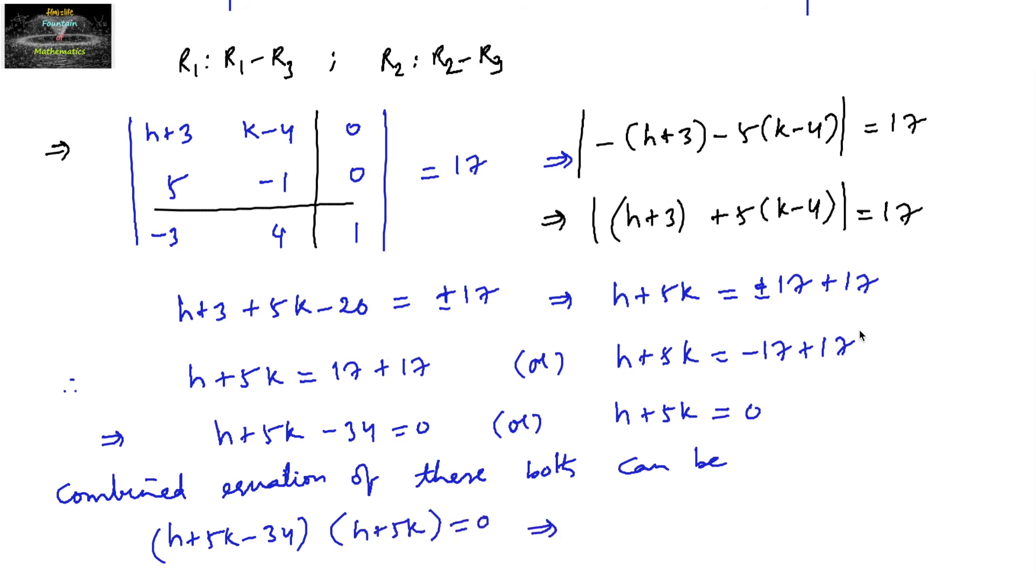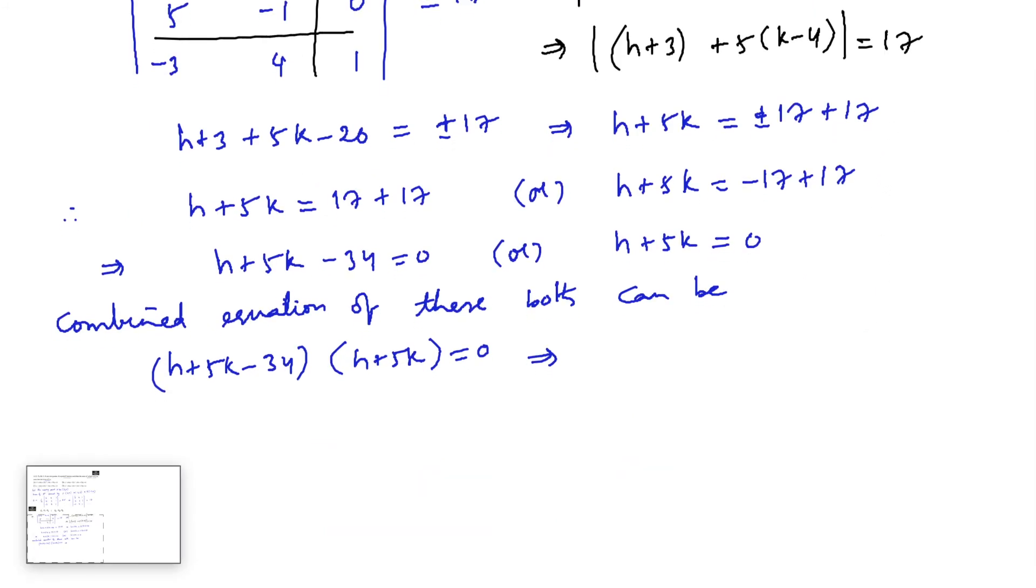So let's multiply this. So H into H, H square, plus 5KH, minus 34H, plus 5HK, plus 25K square, minus 34K is equal